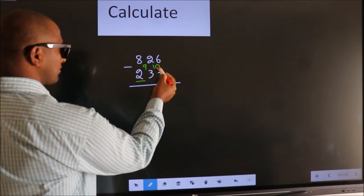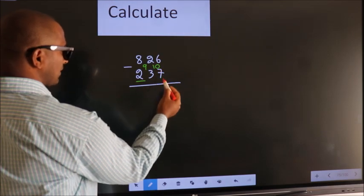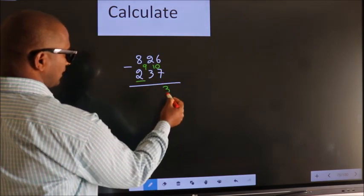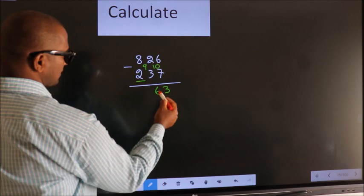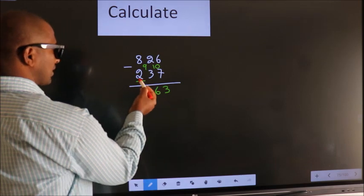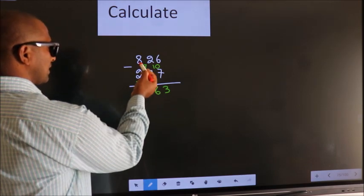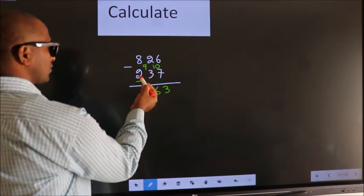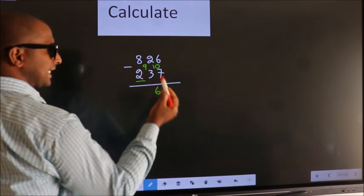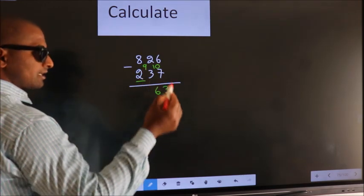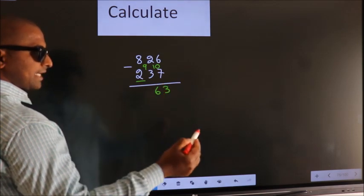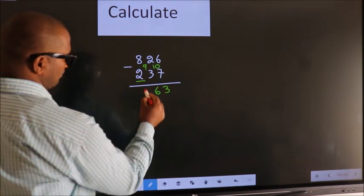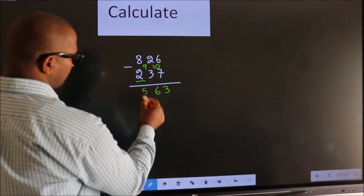Now 10 minus 7 is 3. 9 minus 3 is 6. For the first digit, 8 minus 2 we get 6. Decrease more by 1, we get 5.